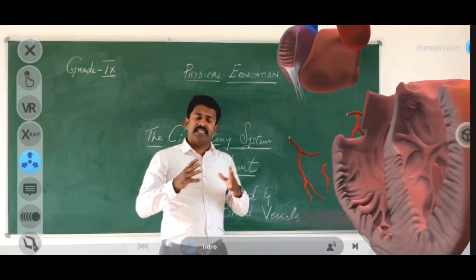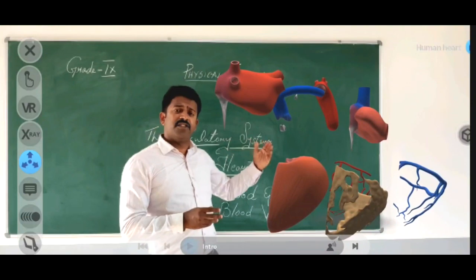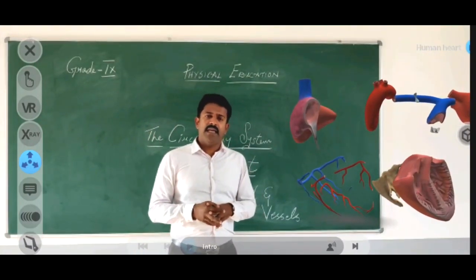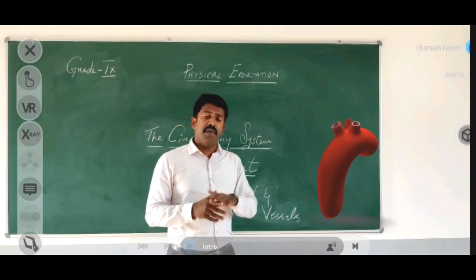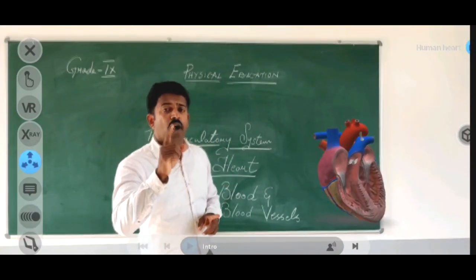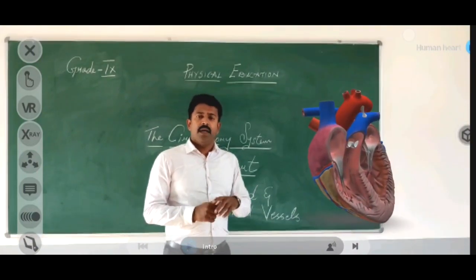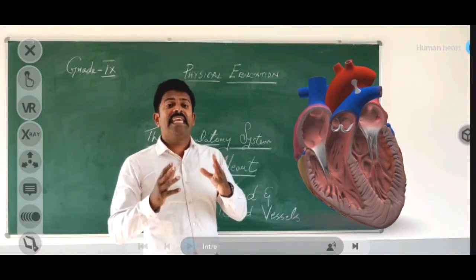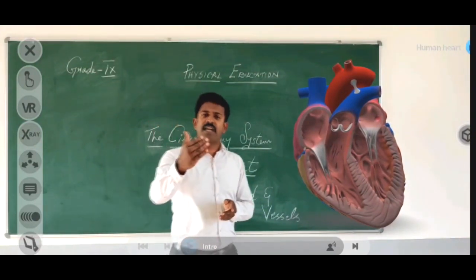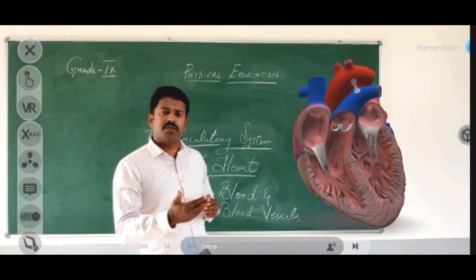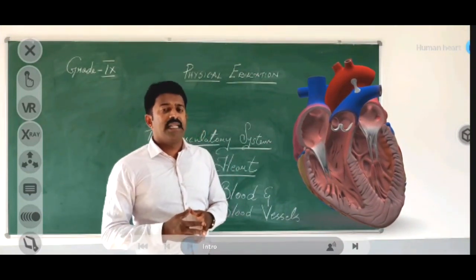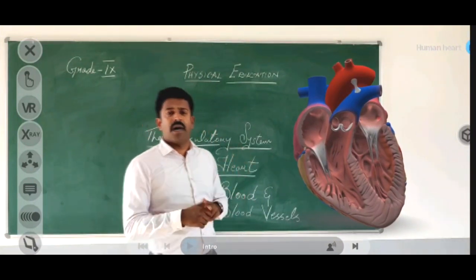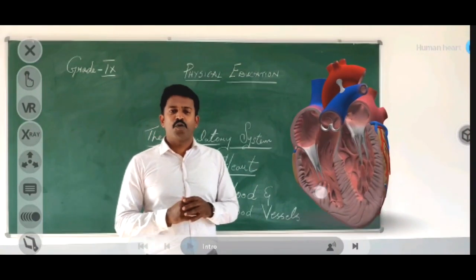This is all about today's class. We saw what the circulatory system is and its three major parts: the heart, the blood, and the blood vessels. We explored the heart — one of the vital organs of the human body — using AR technology to make this concept easier to understand. With the same technology, we will meet in the next class and explore the other two major parts: the blood and the blood vessels. Thank you so much.